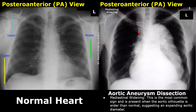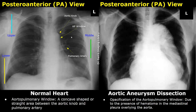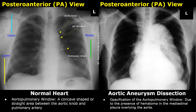Aortic dissection has somewhat similar features to an aneurysm. Mediastinal widening will be seen, but many mediastinal masses can mimic an aortic aneurysm, so it is a non-specific feature. The aortopulmonary window is normally a concave or straight area between the aortic knob and the pulmonary artery, but in aortic dissection this area will be opacified due to hematoma in the mediastinum overlying the aorta.